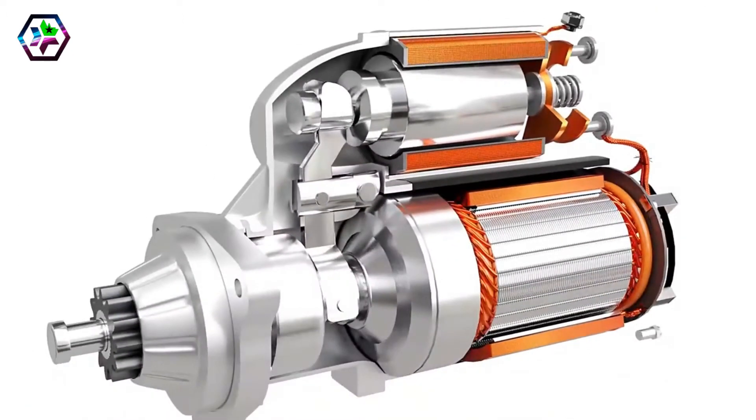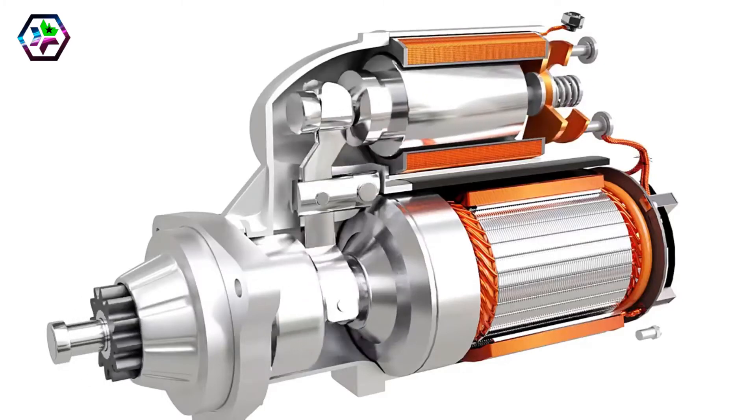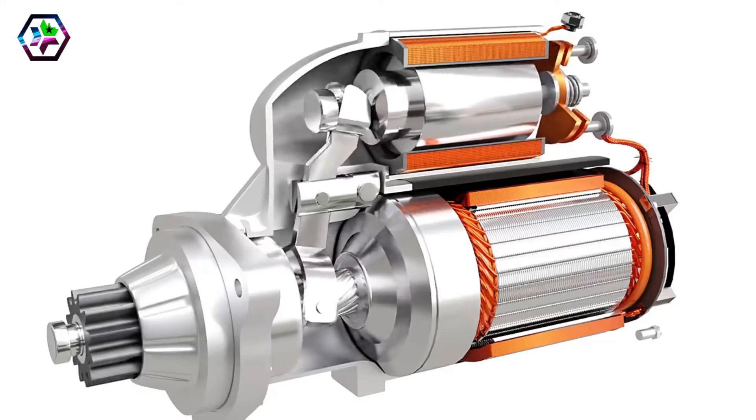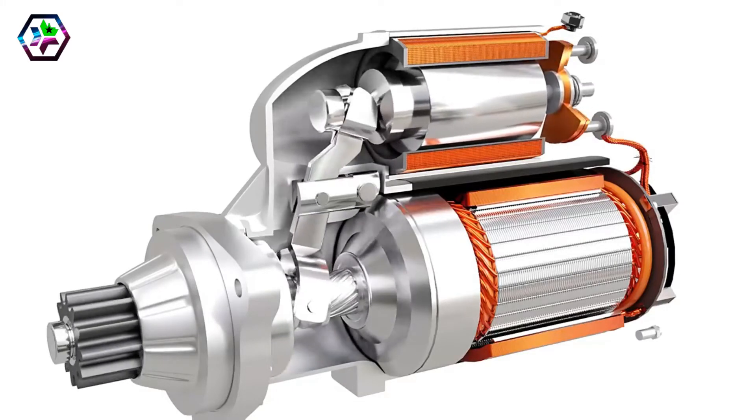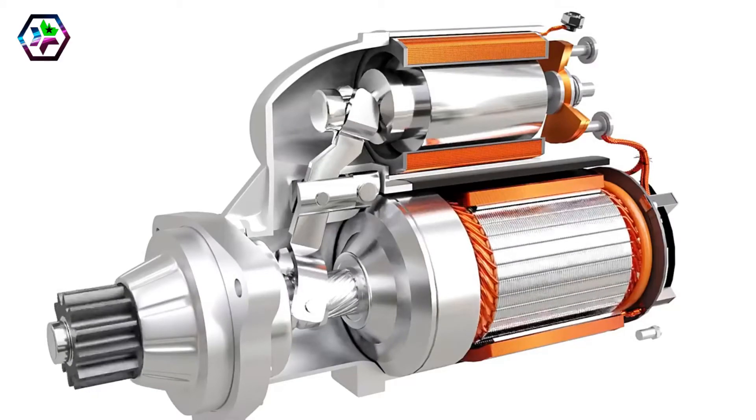The solenoid has another crucial function. It helps to slide the pinion and engage it with a flywheel before the motor starts to spin. As the pinion slides towards the flywheel, it slightly rotates on its axis as shown here. This rotation is achieved by using a helical spline. This rotation helps meshing the pinion with the flywheel more conveniently. As the pinion and flywheel is properly meshed, the contactor switch gets closed and the motor spins.